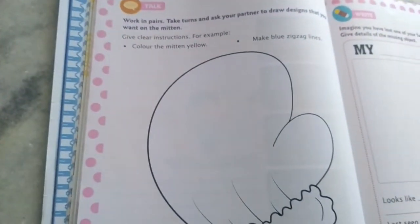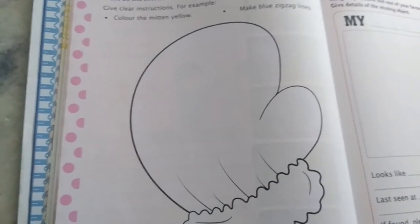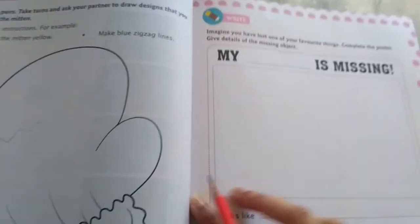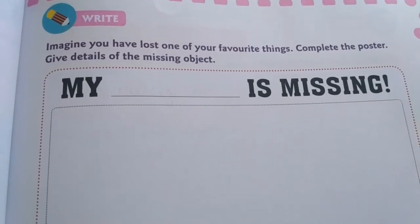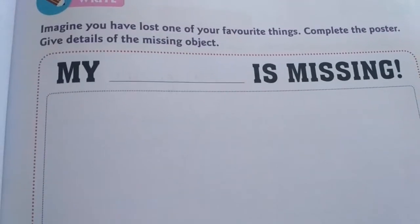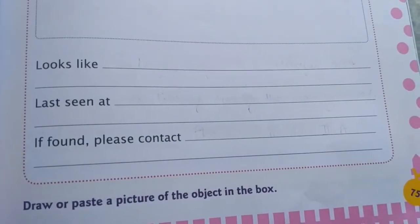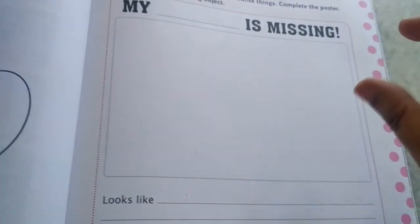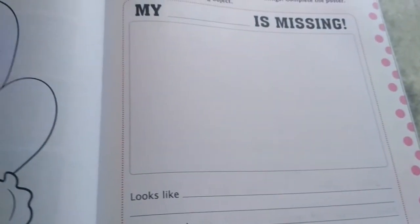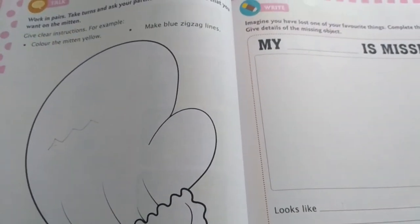Here there is a picture with instructions — you have to color the picture. Color the mitten yellow. There is also a poster activity: you have lost one of your favorite things, and you have to complete the poster with details. Write 'My dash is missing,' fill in the name of the missing object, describe what it looks like, where it was last seen, and contact information with your name and class. Draw or paste a picture of the object in the given space. So this was all about the chapter — learn everything, listen carefully, and attempt your chapter carefully. Thank you.